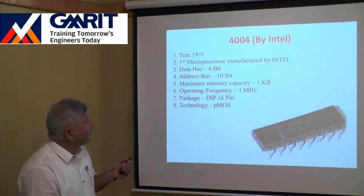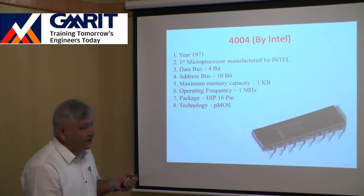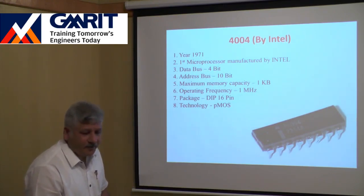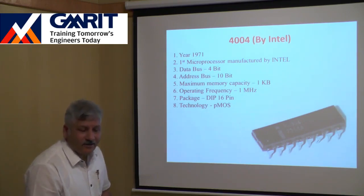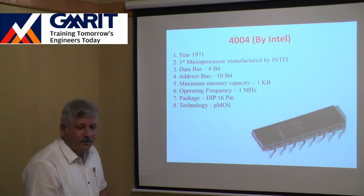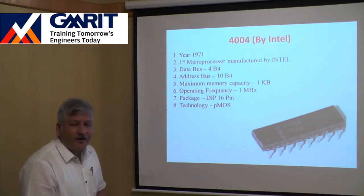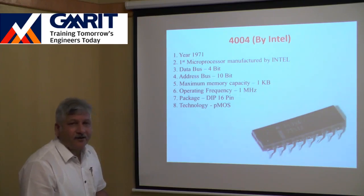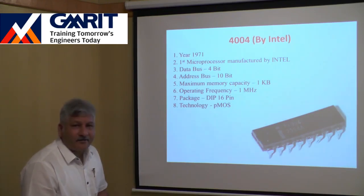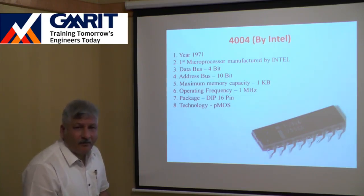The 4004 had a 4-bit data bus and its internal architecture was also 4-bit. This means the arithmetic and logical unit inside could perform operations over 4-bit data, and the general-purpose registers were also 4-bit in length. In one cycle, it could read or write 4 bits of data to or from memory or I/O devices.